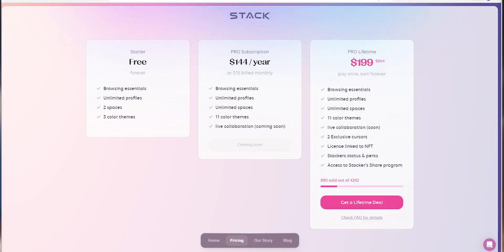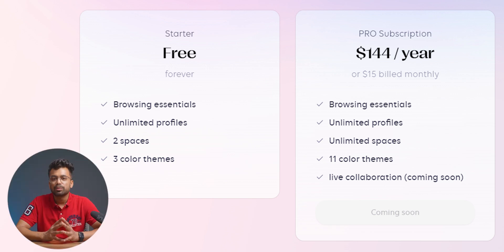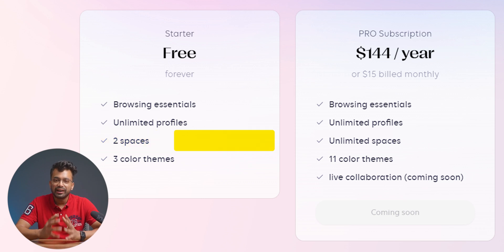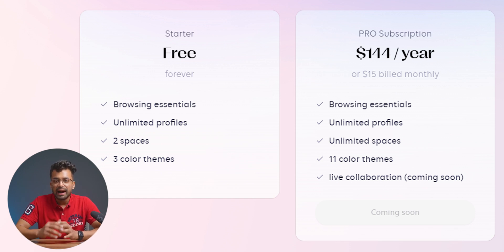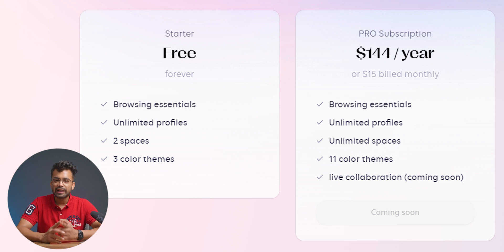You get to access their free plan, pro plan, and pro lifetime plan. The free plan comes with all the browser essentials — security, extensions, tab switching, and more. The pro plan costs $144 for a yearly subscription, but it is not available yet. The free plan offers two spaces for cards, while you get unlimited spaces in the pro plan. You can add as many profiles as you desire in both plans. There are three themes in the free plan and 11 in the pro plan. The pro plan also includes a live collaboration feature which will be released by the end of the year.